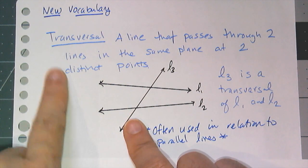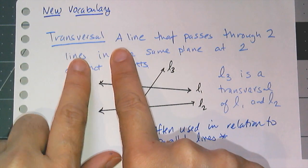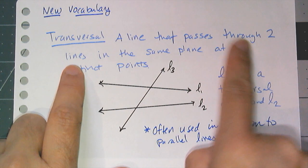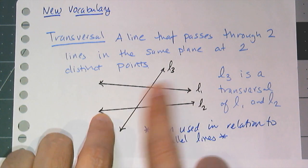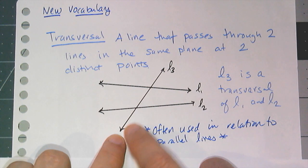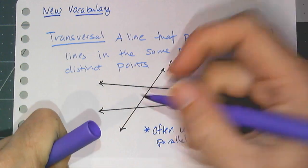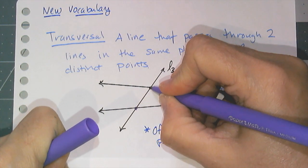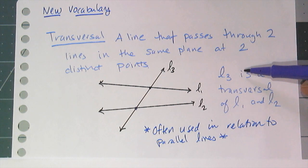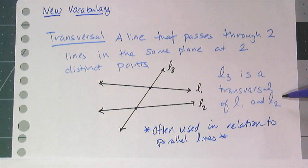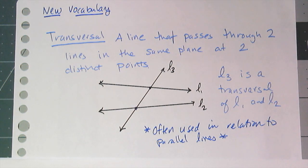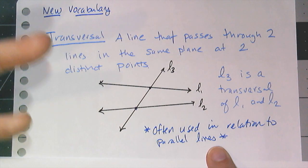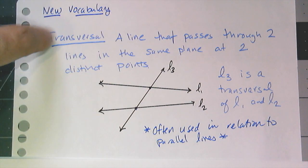Our first new vocabulary word is transversal. A transversal is a line that passes through two lines in the same plane at two distinct points. I have two lines drawn — line one and line two — and then line three that intersects and passes through those other two lines in two distinct points. We say line three is a transversal of line one and line two, or that line three cuts line one and line two. These are often used in relation to parallel lines, but they don't have to be parallel — they just have to fit this definition.